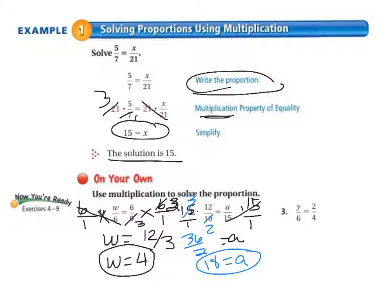On number 3, we need to multiply both sides by 6. That cancels out on the left and we have y equal to something. We're going to cross cancel. 2 goes into 4 two times, 2 goes into 6 three times. Then we multiply. 2 times 3 is 6, and 2 times 1 is 2. 6 divided by 2 equals 3. So y equals 3.